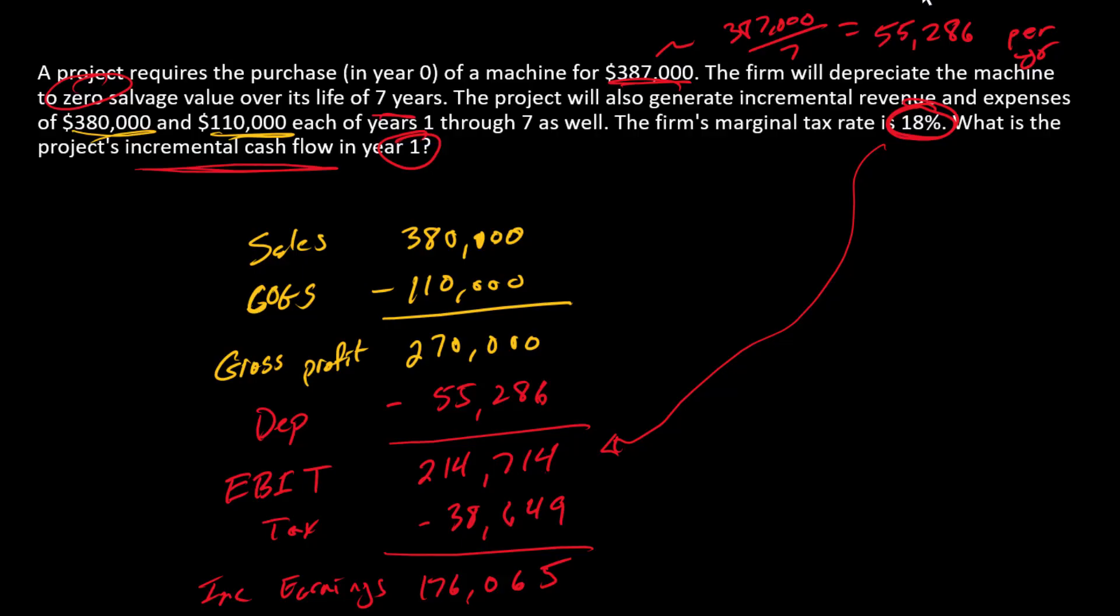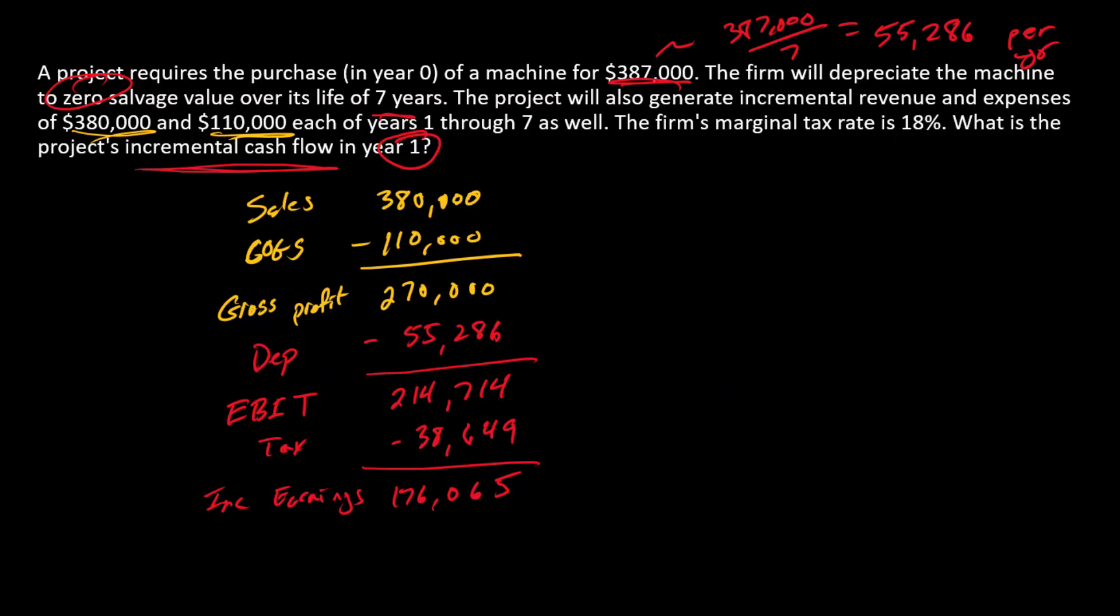So our final step is going to be to go from incremental earnings to incremental cash flow. And so the adjustment here, going from incremental earnings to incremental cash flow, is to simply recognize that this line was a non-cash expense. And so we're going to add it back. So add back depreciation, $55,286.